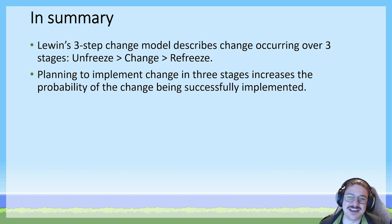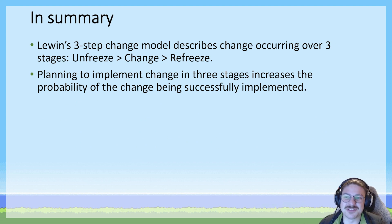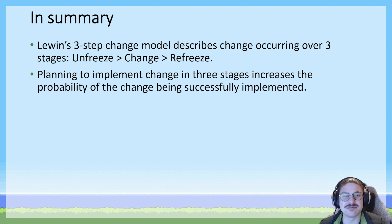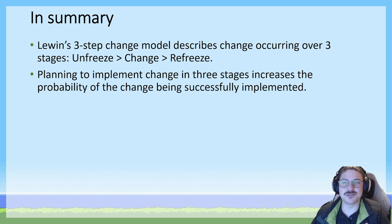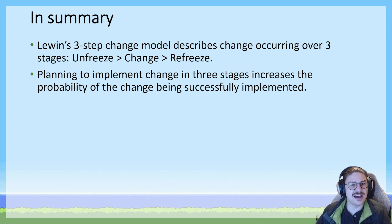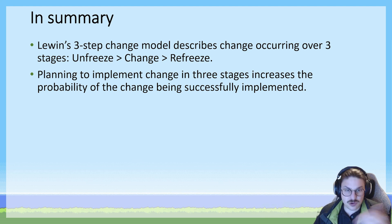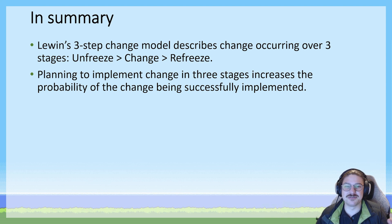In summary for this key knowledge point — it's a nice short one. Lewin's three-step change model describes best practice for a business pursuing change: unfreeze, change, and refreeze. Lewin says a business that plans to unfreeze before they change and refreeze after they change is positioned to increase the probability of their changes being successful far beyond a business that relies on luck to implement change successfully.